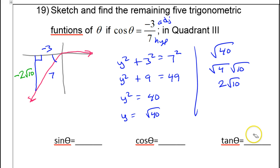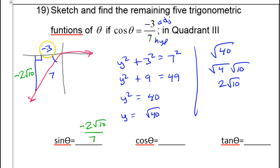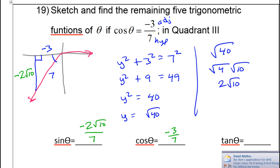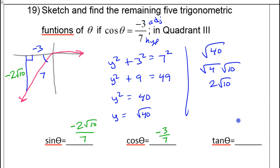With that set up, we can write all the trig functions. Sine is opposite over hypotenuse, so that is −2√10/7. Cosine is adjacent over hypotenuse — we already had that — it's −3/7. Tangent is opposite over adjacent: a negative divided by a negative gives a positive, so that's 2√10/3. The negatives cancel out.